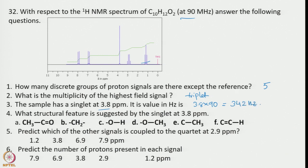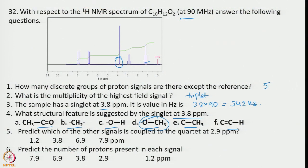What structural feature is suggested by the singlet at 3.8 ppm? This signal is not coupled with anything and has oxygen nearby. Since it is not coupled with any other proton, that means there is an electronegative atom between two carbon atoms. Since the heteroatom here is oxygen, it has to be an OCH3 group.